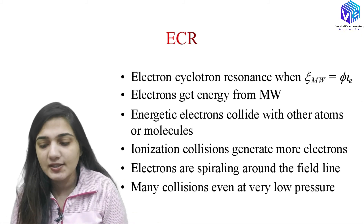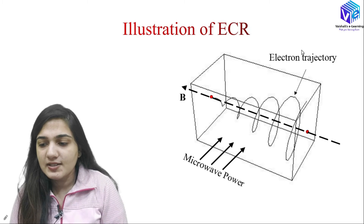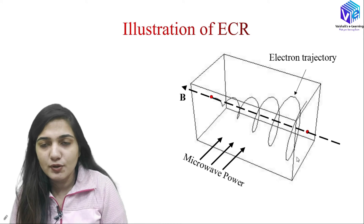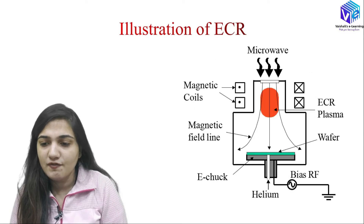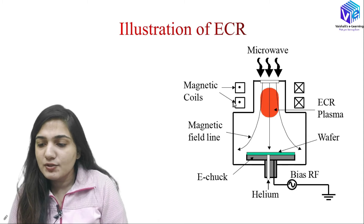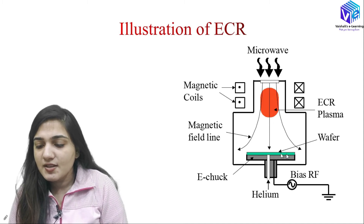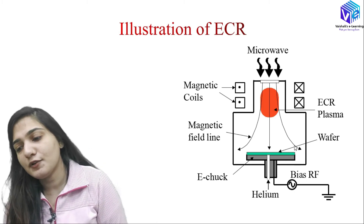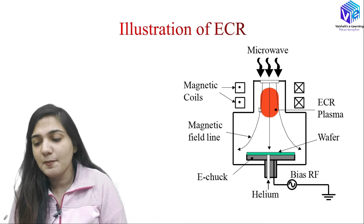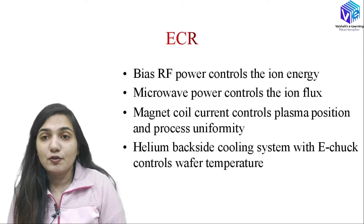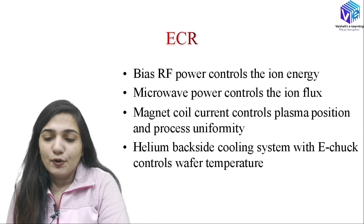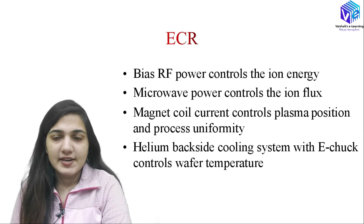In the ECR schematic, you can see the electron trajectory making more and more collisions, which is used for forming high-density plasma. We use magnetic coils and a microwave source, generating plasma at lower pressure — this is the high-density plasma. The setup includes the wafer, electrostatic chuck, helium backside cooling, bias RF voltage, and the ECR plasma.